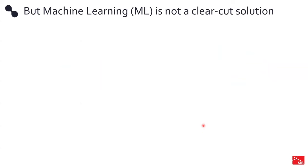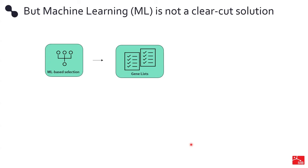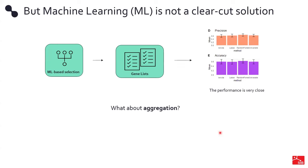Your next line of thinking is: what if I do some basic machine learning feature selection on this dataset to tackle some of these problems? You do the machine learning-based selection, apply your methods, get your gene lists — several of them — and then you get something like this, which is very hard to judge because the performance of every method is quite across the board. It's really hard to say that one method is better than another.